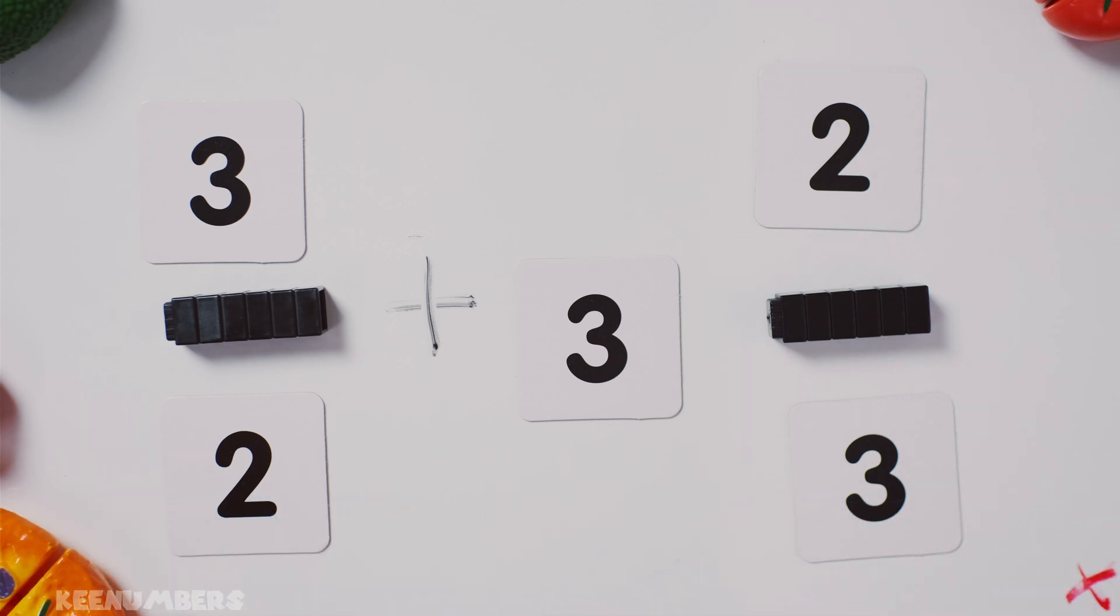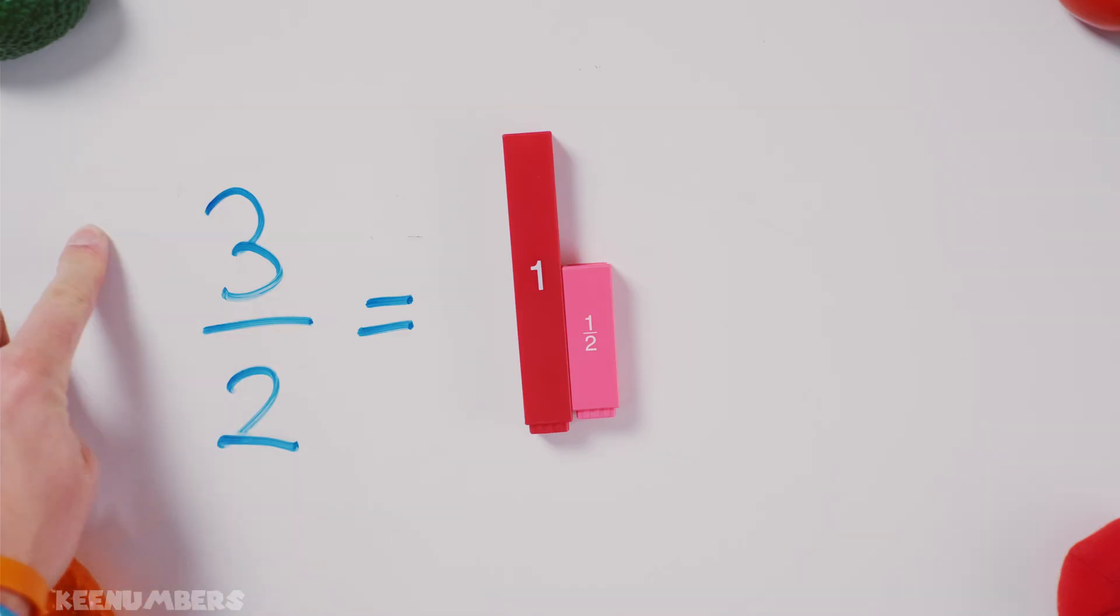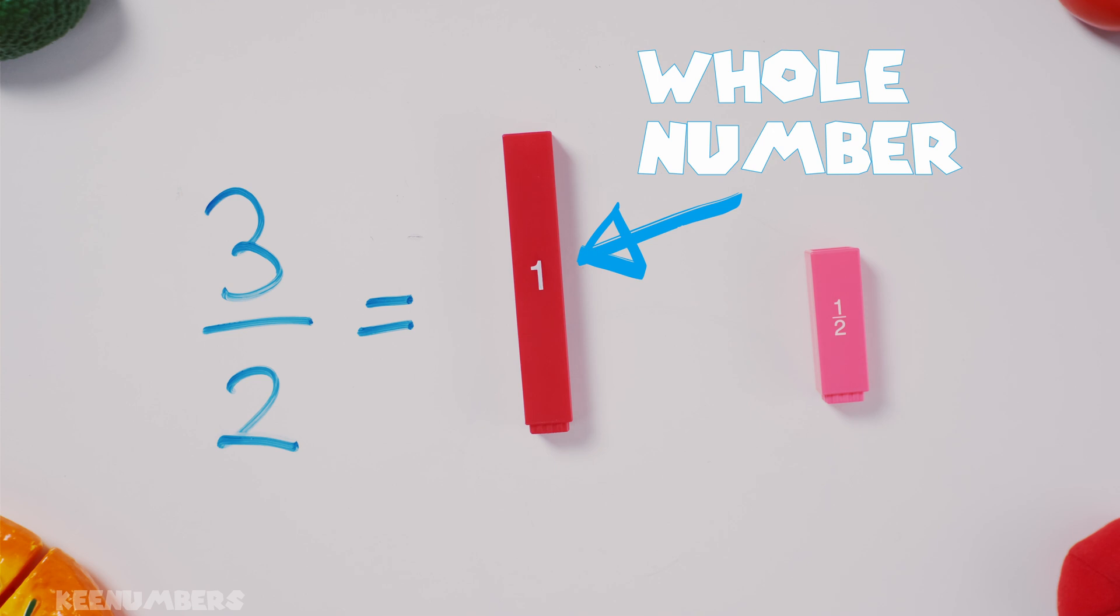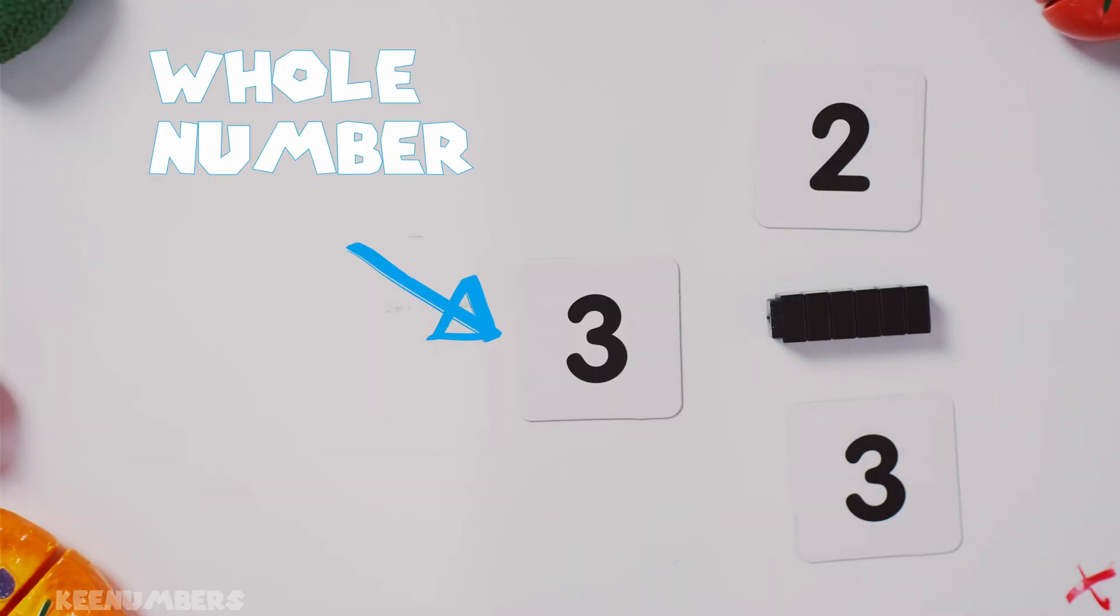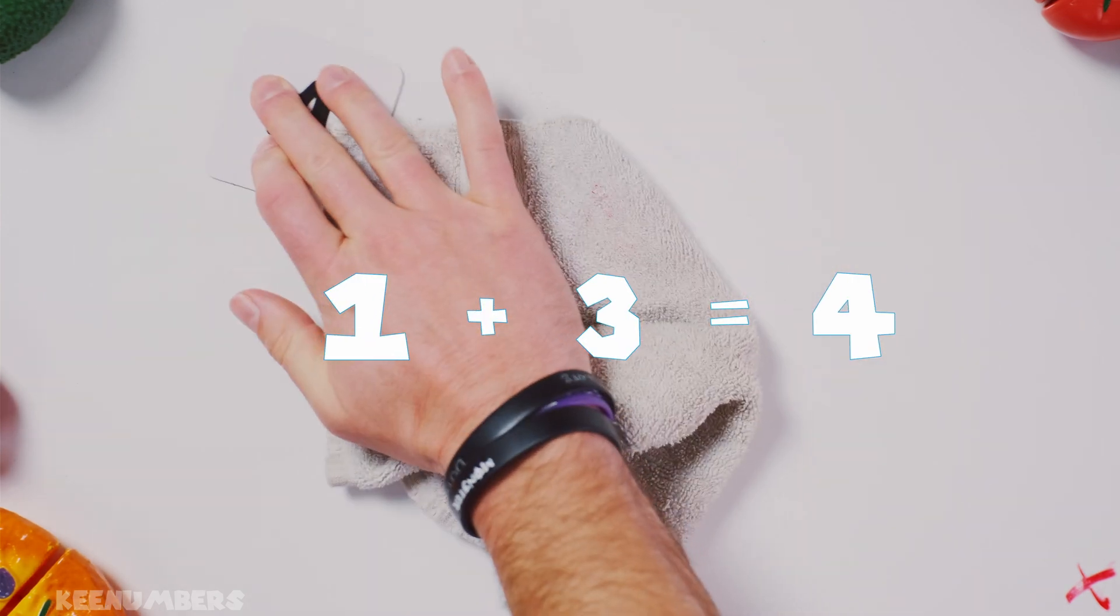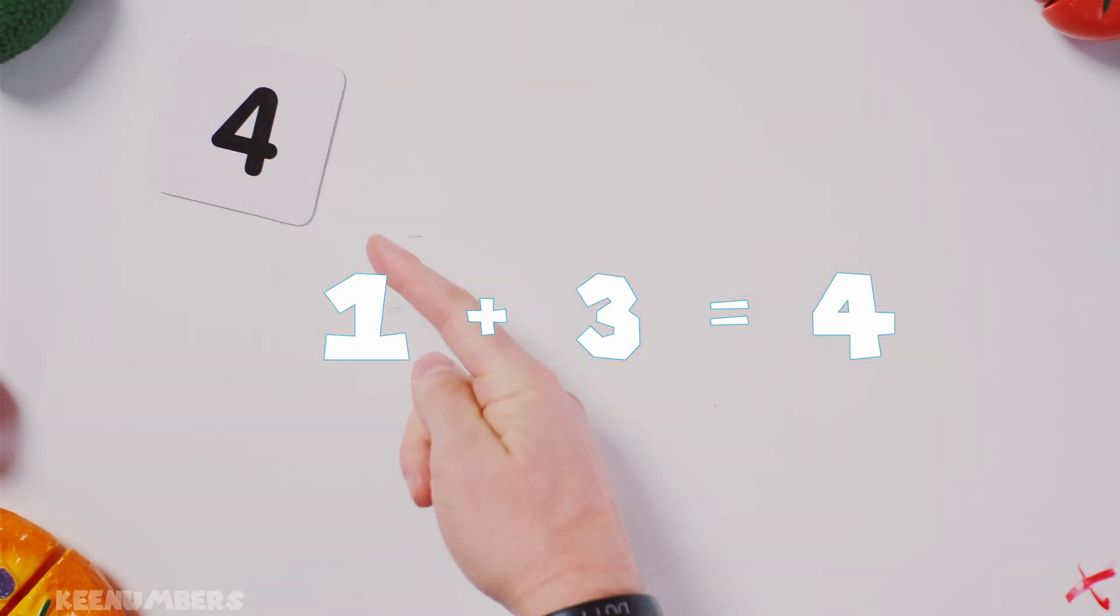Okay, you're going to have to use the least common denominator here. But first things first, remember what Uncle Bob said. You add the whole numbers together. So 3 halves, that's really 1 and a half. And then 3 and 2 thirds. So you're going to park the 1 and the 3 together. 1 plus 3, that's 4. You're going to park that.